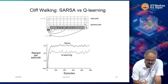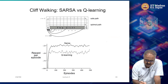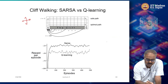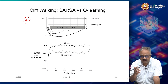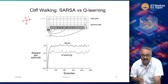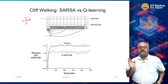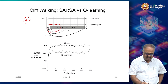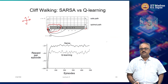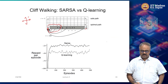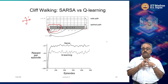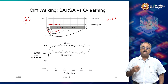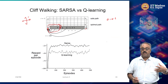Here is the cliff world example — a grid world where every step gives a reward of minus 1. If you fall off the cliff, you get a reward of minus 100 and are transported back to the start state. The goal is to reach the goal state as quickly as possible. With Q-learning, keeping epsilon fixed at 0.1, Q-learning ignores all exploratory actions — occasionally you might fall off the cliff and get minus 100, but when updating the value function for the previous state, it looks at the best possible action, not the one actually taken.